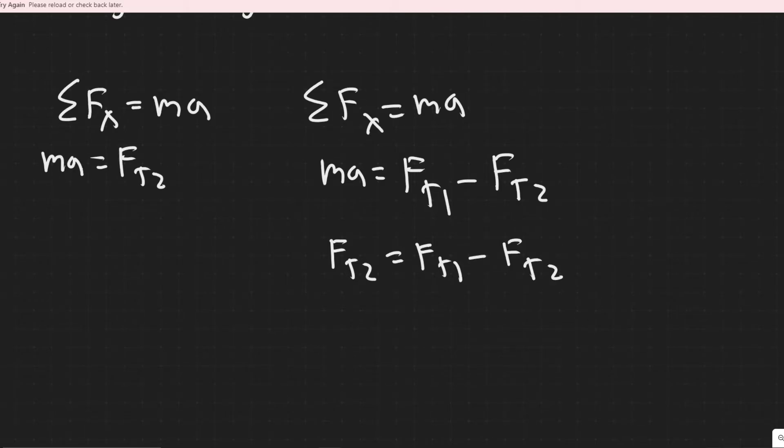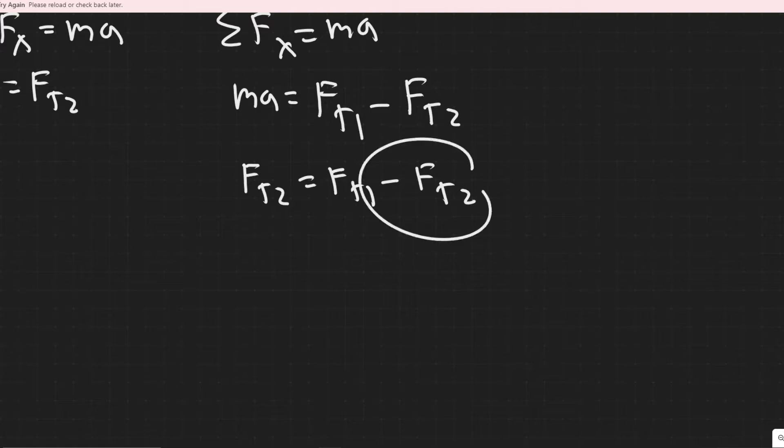But what you should notice is that Ft2 is equal to MA. So we can replace MA here with Ft2. And then you get Ft1 minus Ft2. If we want to get it as a ratio, you would just add this to the other side. So you would basically get Ft1 is equal to twice Ft2.